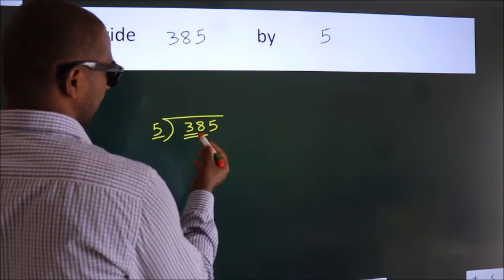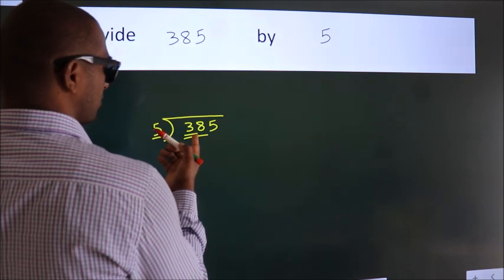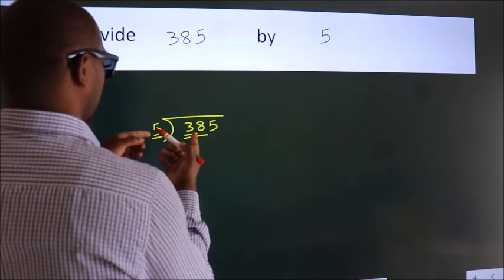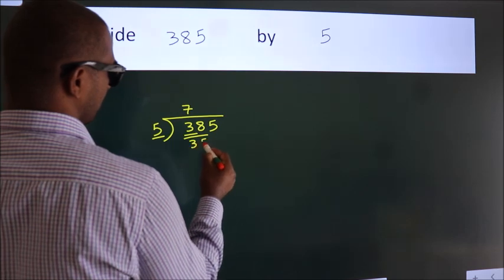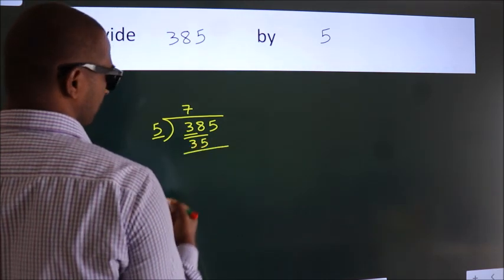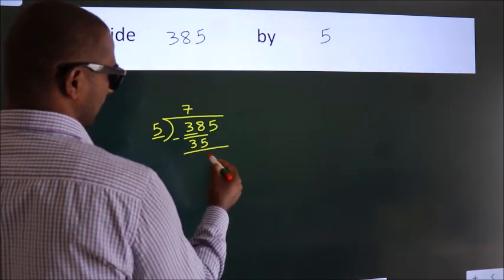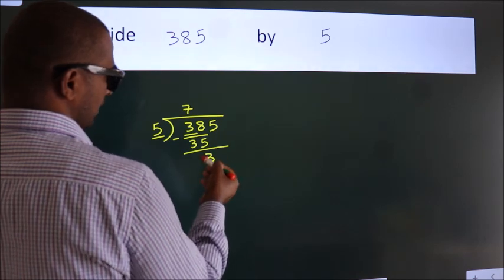A number close to 38 in the 5 table is 5×7=35. Now we should subtract. We get 3. After this, bring down the next number, 5.